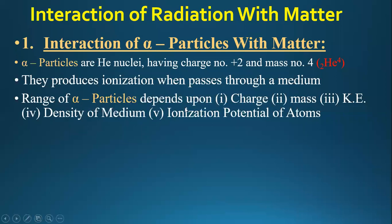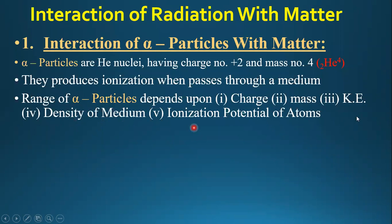The range of alpha particles depends upon several factors: the charge of the alpha particle, its mass and kinetic energy, the density of the medium (denser media reduce their range more), and the ionization potential of the atoms in the medium. These four or five factors describe how the range of alpha particles is affected.